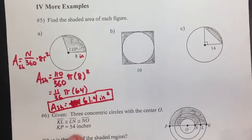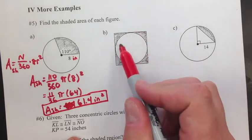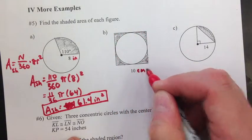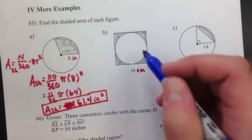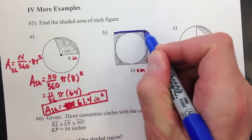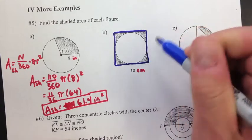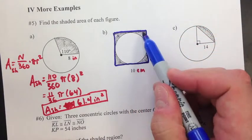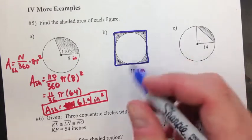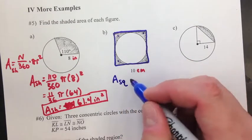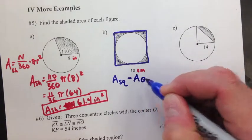Now part B, we have a square and then we have a circle inside the square. Let's say that's 10 centimeters. We want to find the shaded area. The strategy here, let's take the square. If I could take out the circle, all that would be left is the shaded area. So I'm going to do area square minus area of circle.